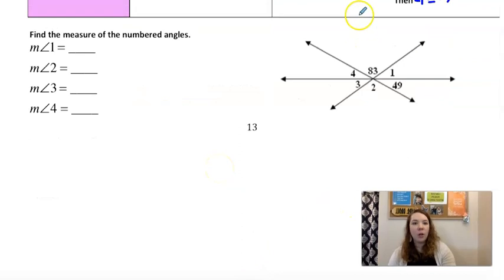All right. Find the measure of the numbered angles. So what I like to do with these kind of problems is just fill them in and then go back and do this part. So straight across here, angle 2 also has to be 83. Straight across here, angle 4 also has to be 49. And then I know that these three have to be 180. So if I take 180 minus 83 and minus 49, I get 48. And then straight across this is 48. And then you can go back in and fill in what they were asking you for.